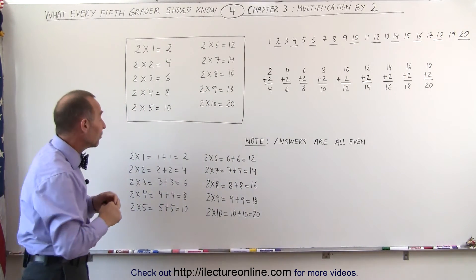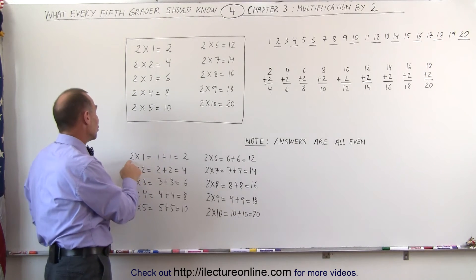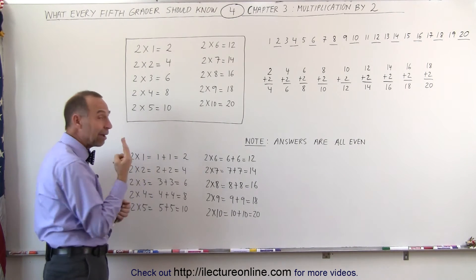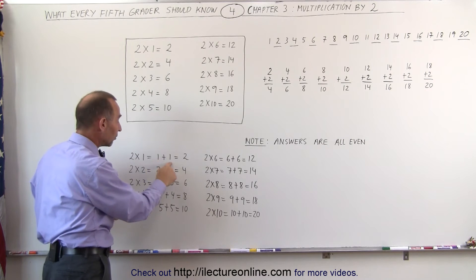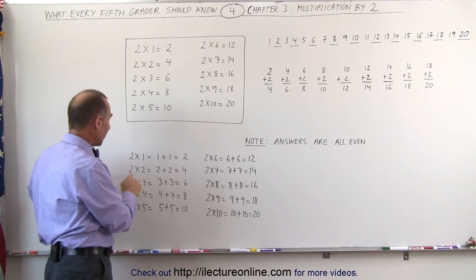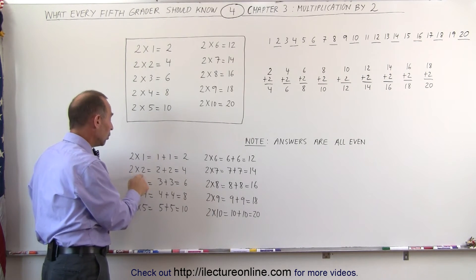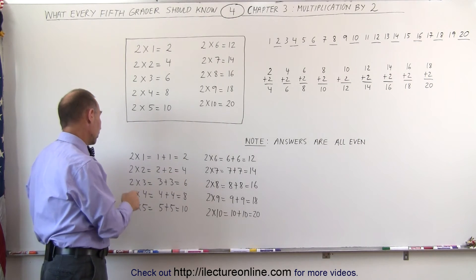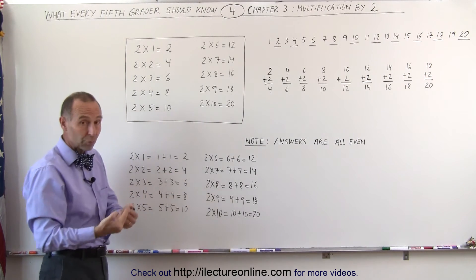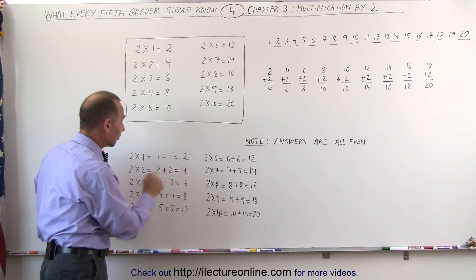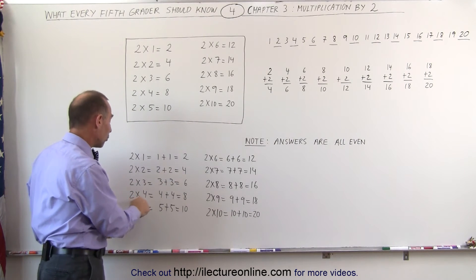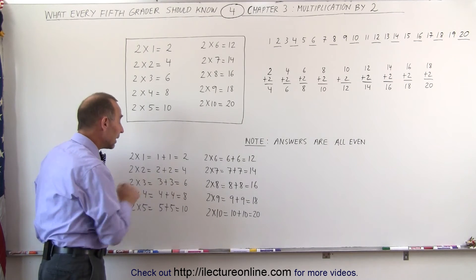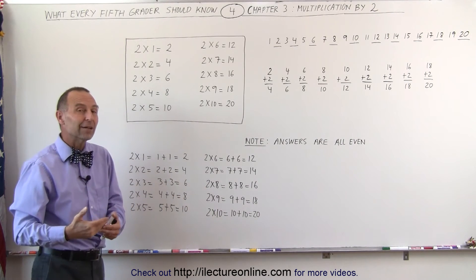Another way of looking at multiplication times 2 is realizing that when you say 2 times 1, you simply mean that you have two 1's, you add them together, and you get 2. When you multiply 2 times 2, that means you have two 2's, you add them together, you get 4. Multiplying 2 times 3, you have two 3's, you add them together, you get 6. Multiply 2 times 4, that means you have two 4's, you add them together, you get 8. And you can see the pattern here.